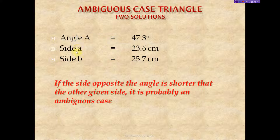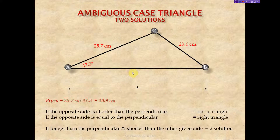We have angle A and side A, so we have a side opposite that particular angle. Now we have to run our check: is the side opposite the angle shorter than the other given side? If it is, there's a possibility of this being an ambiguous case, with two other scenarios also possible. Let's look at this from a diagram point of view.